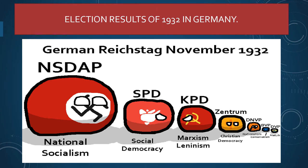To understand how Hitler became Chancellor, we need to understand the election results of 1932 in Germany. In this picture you can see the German Reichstag, November 1932. But we will also talk about what happened in July 1932. In July 1932, the Nazis got 230 seats. In this you can see the logos of the parties.